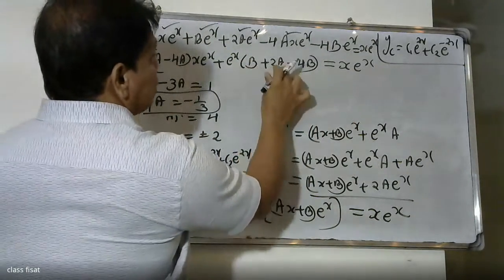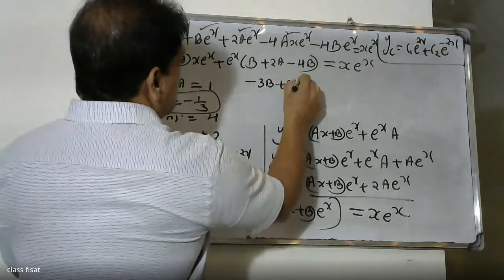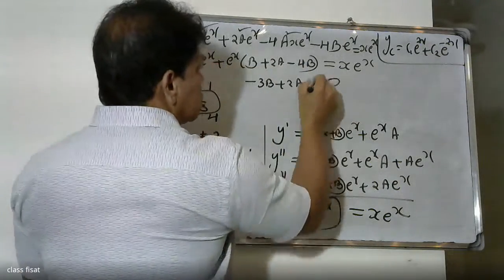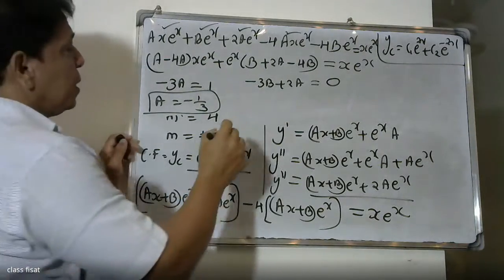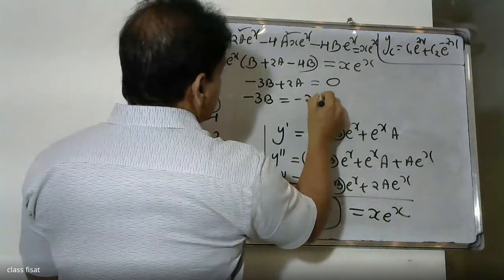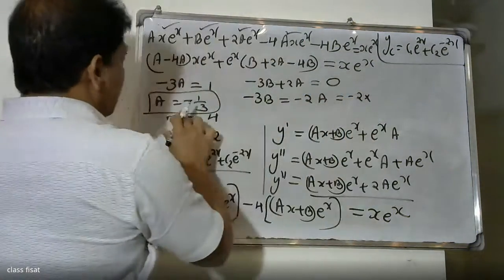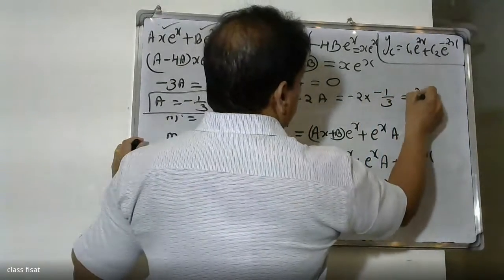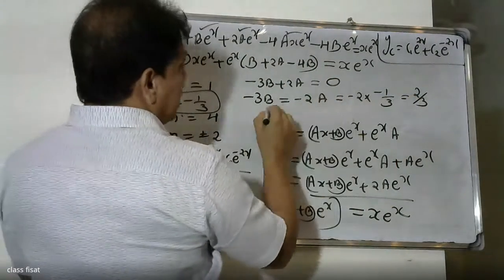Now equating coefficients of e raise to x on both sides: minus 3b plus 2a equals 0. Substituting a equals minus 1 by 3: minus 3b plus 2 into minus 1 by 3 equals 0, so minus 3b minus 2 by 3 equals 0, giving b equals minus 2 by 9.